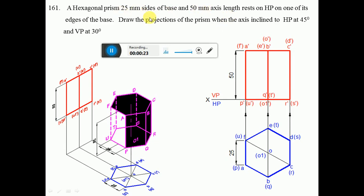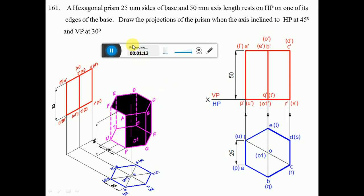Since it says 25 mm sides and 50 mm axis length resting on HP, we start from the base. It is resting on one of the edges of the base, so the edge resting on HP has to be perpendicular to VP. PU and RS will be the two edges perpendicular to VP. Since it is a hexagon, a side opposite is also a side, and similarly a corner opposite to that will be a corner for an even number of sides, similar to a square. Since it is resting on one of the edges, the base resting on HP is PU and RS, both perpendicular to VP.